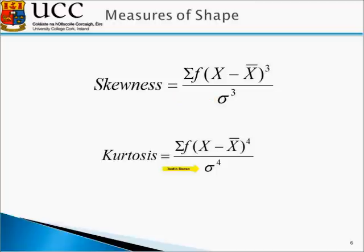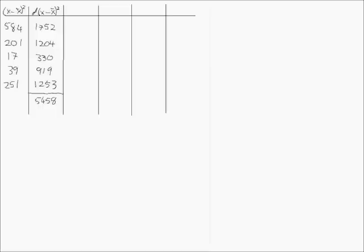So let's first take a look at calculating out our skewness measure. We note we now need another column, which is x minus x-bar to the power of 3. The first value is x minus x-bar, which is minus 24, to the power of 3. Note that when we put something to the power of 3, the minus signs do not disappear.